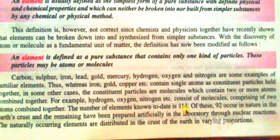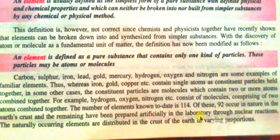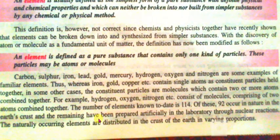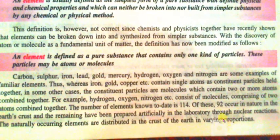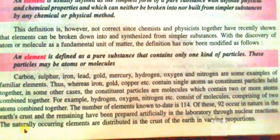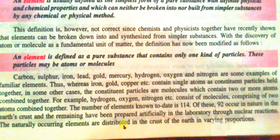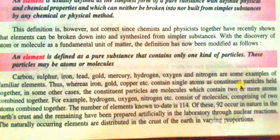The number of elements known to date is around 114 to 115, of which the majority occur naturally in the earth's crust, and the remaining have been prepared artificially in the laboratory through nuclear reactions. The naturally occurring elements are distributed in the crust of the earth in varying proportions.